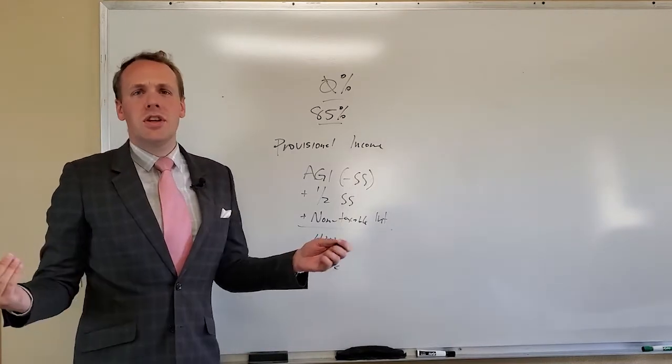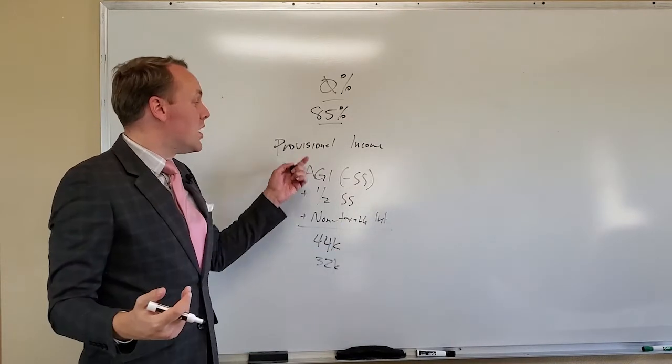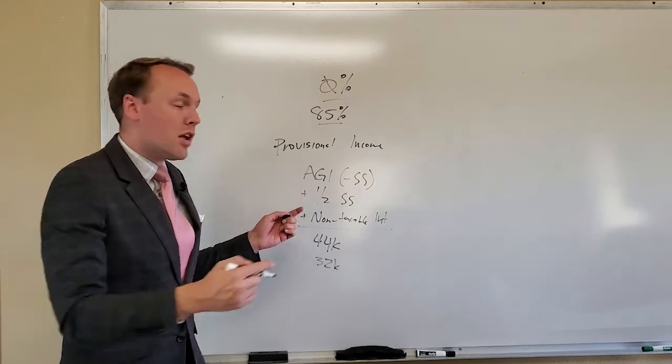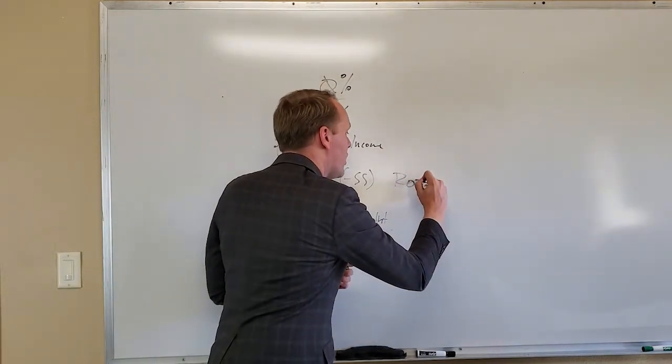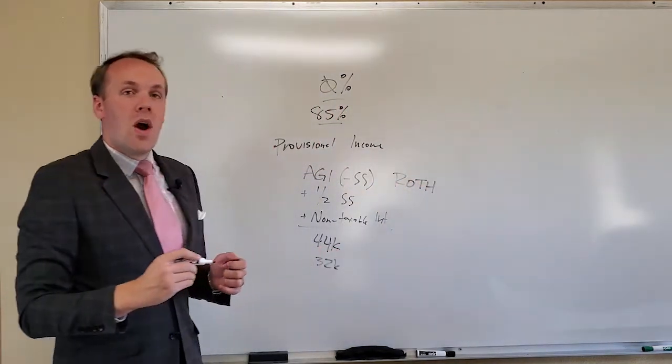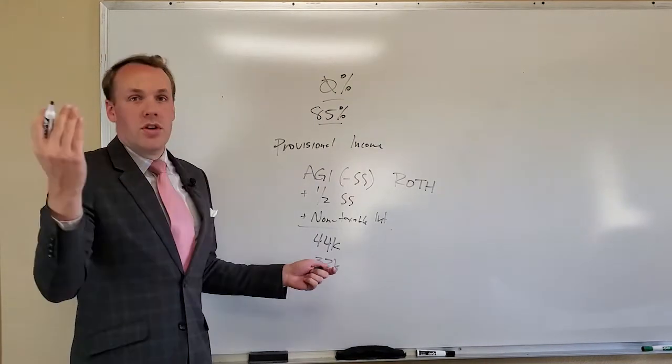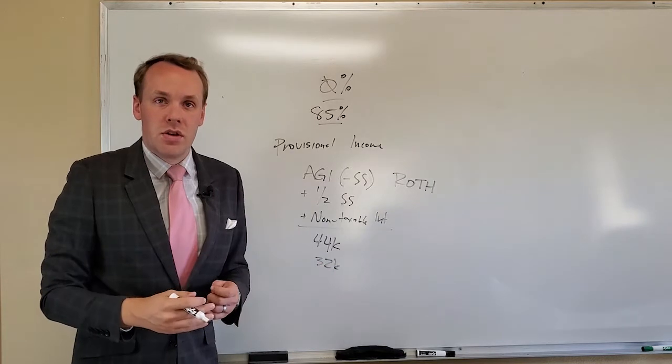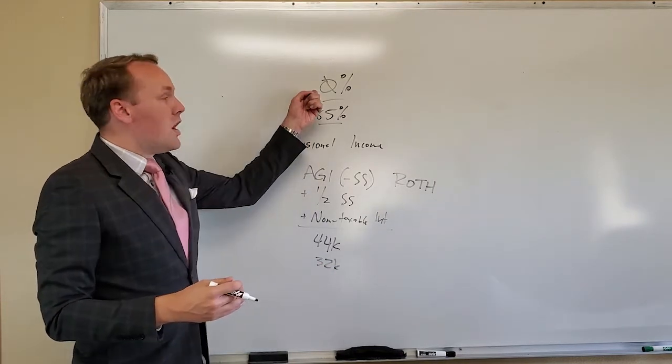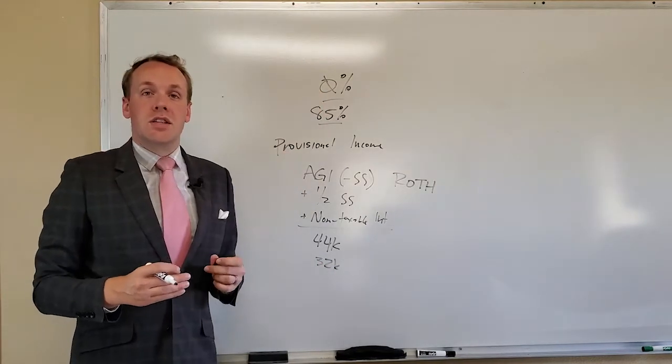Well, Gage, how in the world can I live off of $32,000? Guess what doesn't show up in the provisional income scale? Roth withdrawals. So if you have money that's sitting in a Roth, you can take that money out more than $32,000. You can pull out $100,000 a year if you wanted to, but none of your Social Security would be considered taxable income.